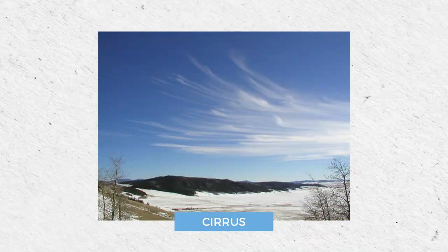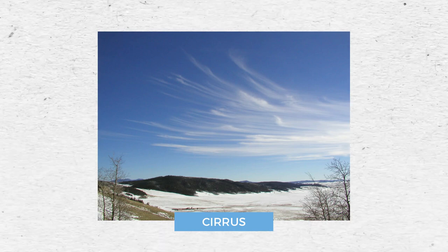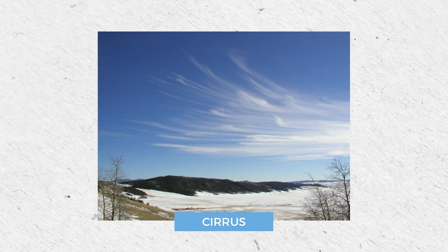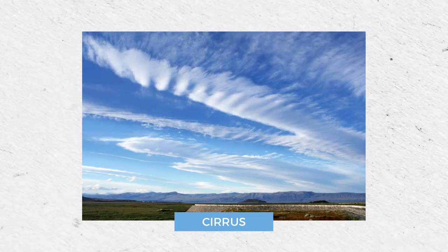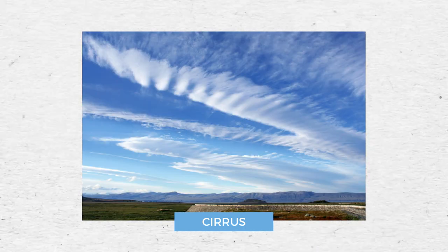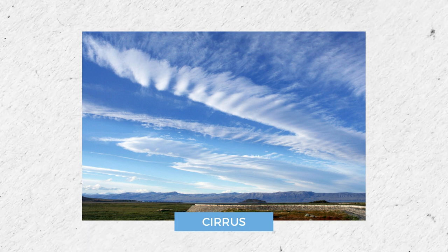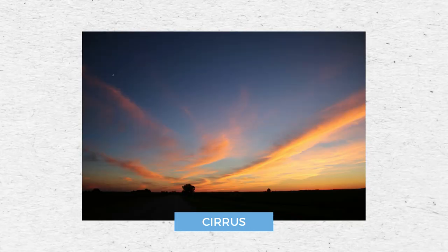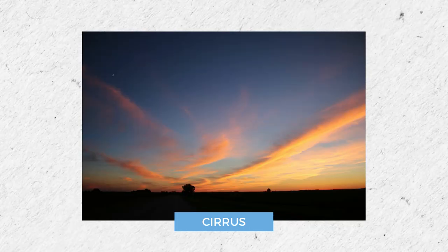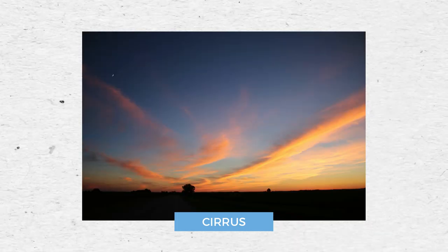Cirrus clouds are one of the most common types of clouds. They can be seen at any time of the year. They are thin and wispy, and stand out among other types of clouds because they are often colored in bright yellow or red before sunrise and after sunset.